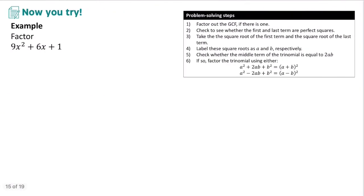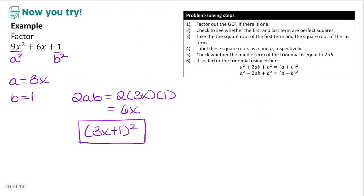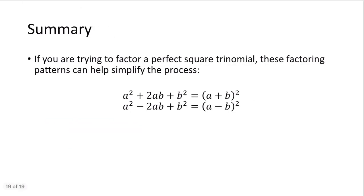Pause the video and try this example on your own. The first term is 9x², and the square root of 9x² is 3x. The last term is 1, and the square root of 1 is 1. Then 2ab = 2 times 3x times 1 = 6x, which matches the middle term. We have a plus sign, so this factors as (3x + 1)². These factoring patterns can help you simplify the process when factoring perfect square trinomials.